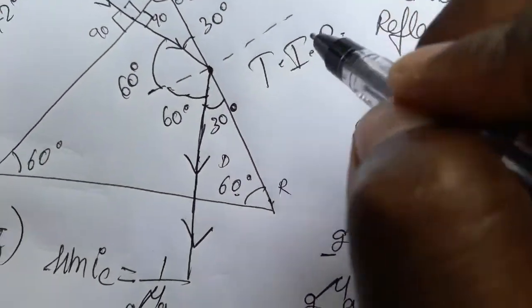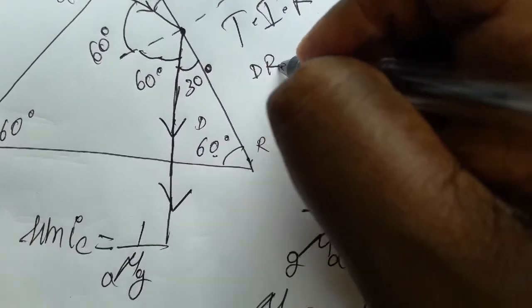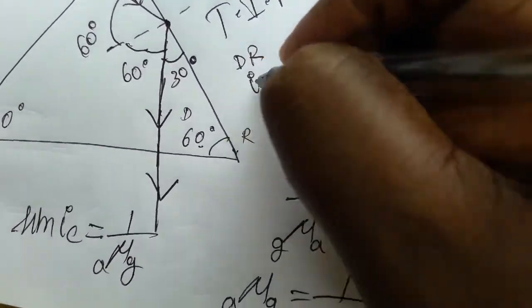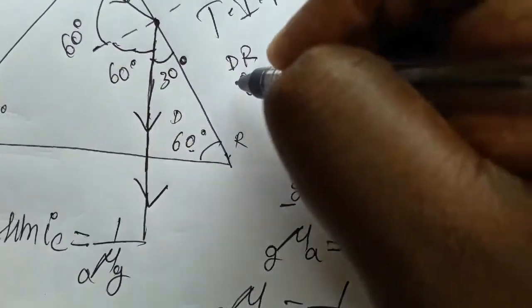This only happens when the light is traveling from denser medium to rarer medium and also the incident angle is more than the critical angle.